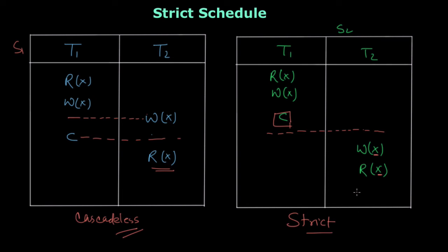But this is not the case in most situations. Quite often transactions work with multiple data items. So if we have some data item Y, then transaction T2 can perform, let's say, read Y in between. Now you can see it is not a serial schedule — but yes, it is still a strict schedule.